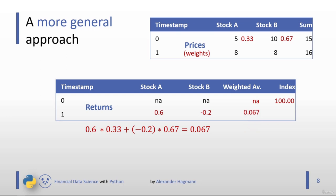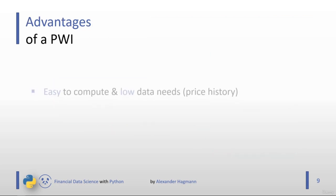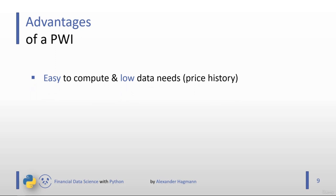Now let's go to the pros and cons of the price-weighted index. One advantage is that it's easy to compute — we only need the price history of our constituents. The intuition is straightforward: it's like having a portfolio with one share per constituent. Additionally, a price-weighted index is self-rebalancing, so we do not have to rebalance the weights over time, which minimizes transaction costs and taxes.